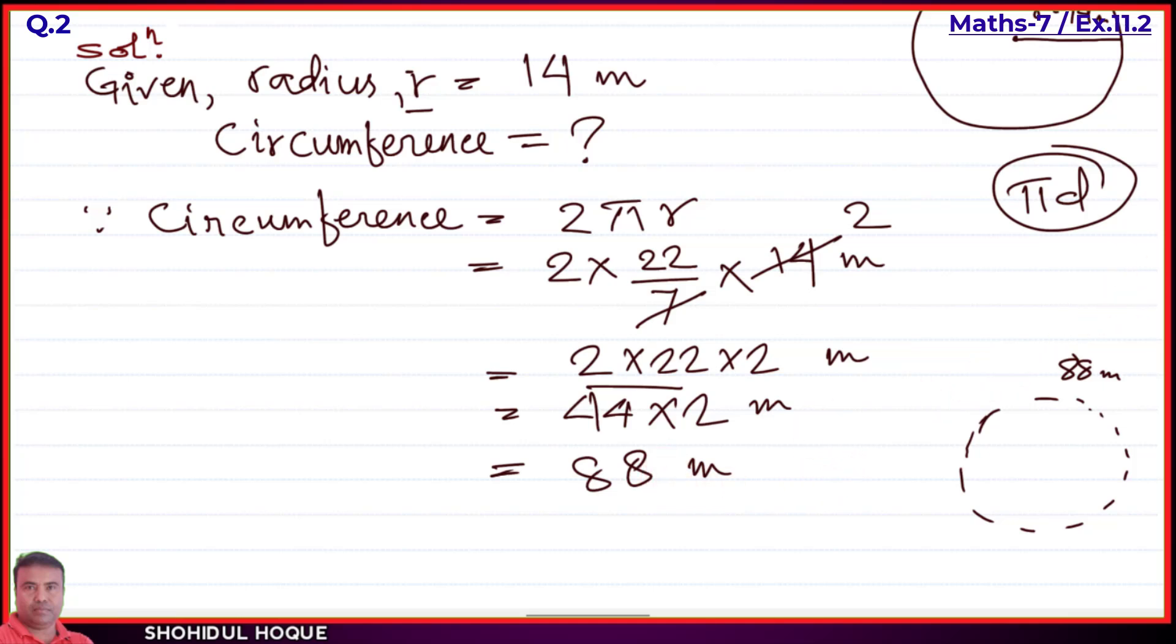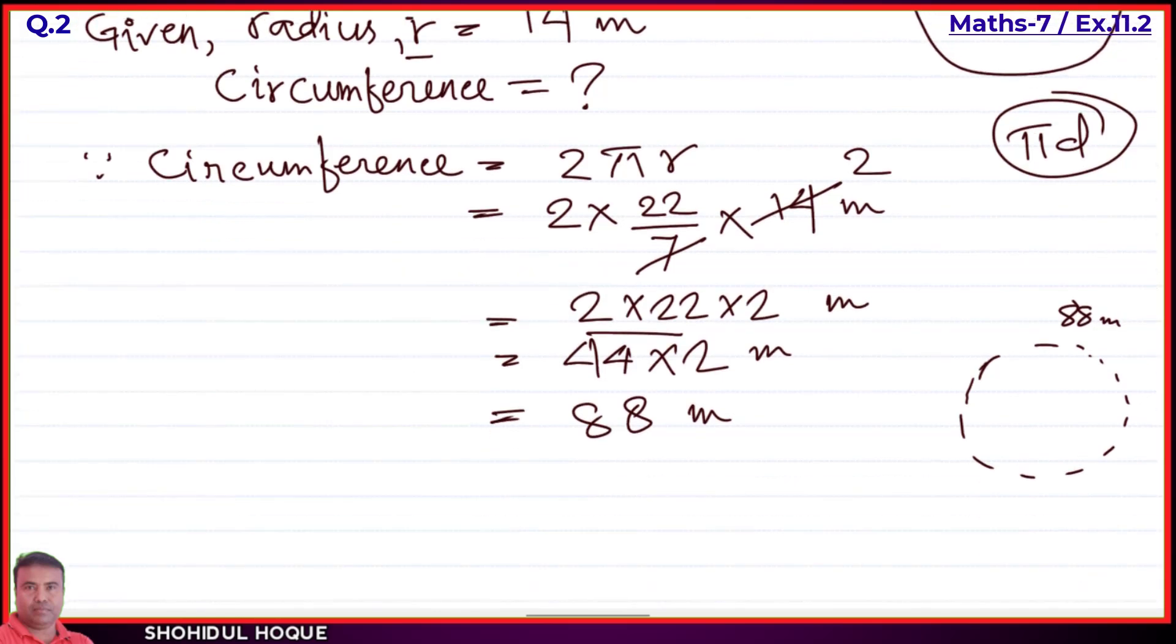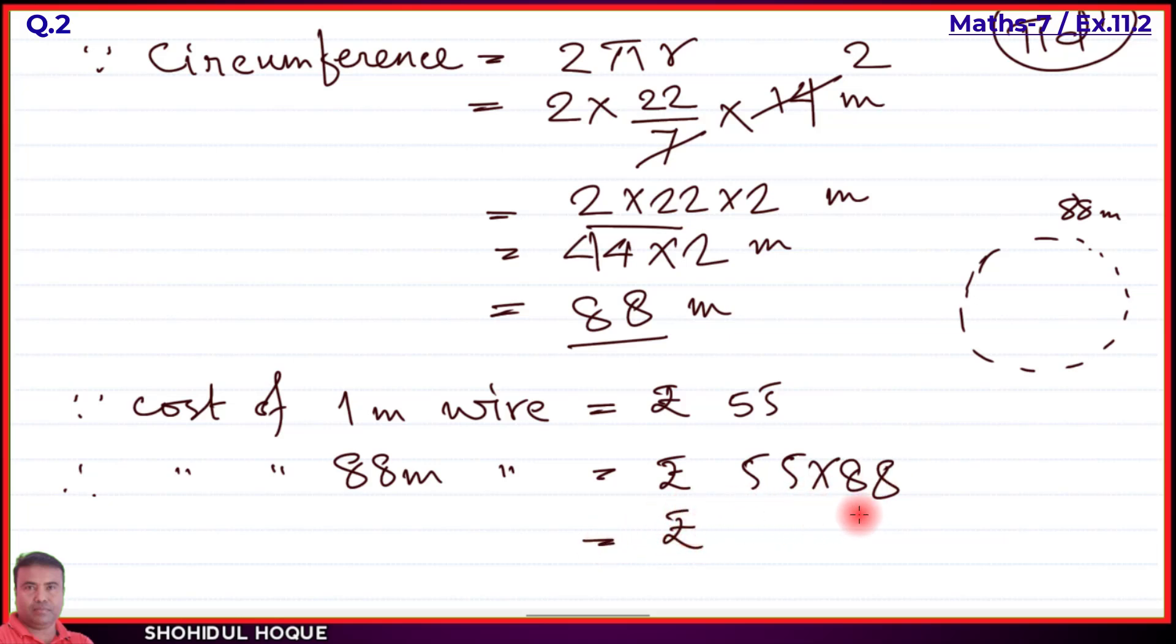Now for the cost. The question says the cost is 55 rupees per meter. Cost equals: if one meter costs rupees 55, then 88 meters will cost 55 times 88 rupees, which equals 4,840 rupees. That's the answer for the fencing cost.